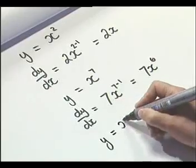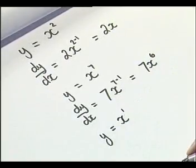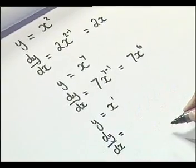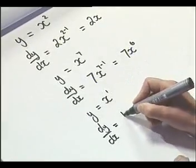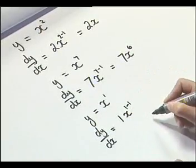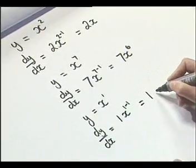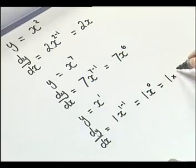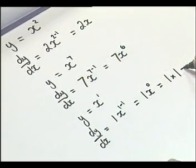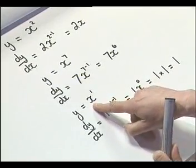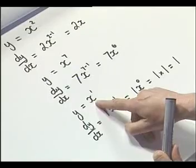Now, what happens when we have y equals just x, x to the power of 1? Well, we already know the derivative of this, but let's see how it fits with the rule. Bring down the power: 1 times x to the power of 1 take away 1, so we have 1 times x to the power of 0. Well, x to the power of 0 is 1, so it's 1 times 1. So we end up with the derivative of 1, which is exactly what we expected, because we know the gradient function of y equals x is 1.